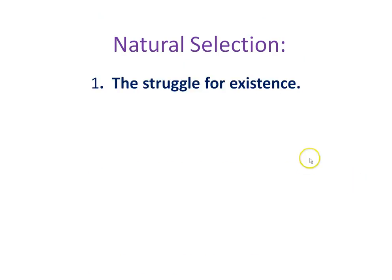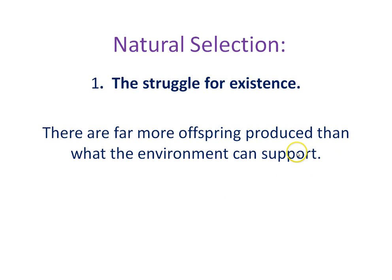Natural selection. There is a struggle for existence — no one gets a free lunch in nature. There is competition for resources, and there is more ability of offspring to reproduce than what the environment can support. If there's only enough food in the forest for 1,000 deer and the deer keep multiplying, eventually there's a fierce struggle for existence or competition for what little is available.